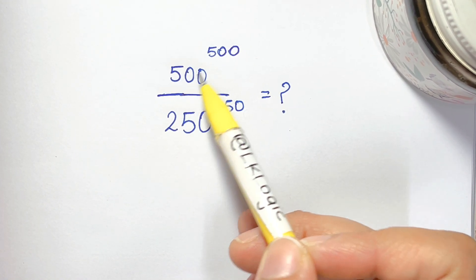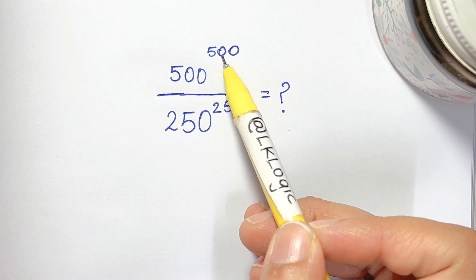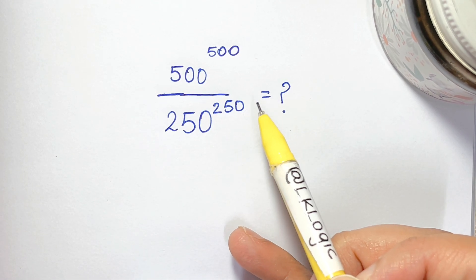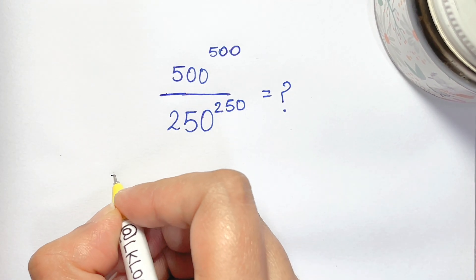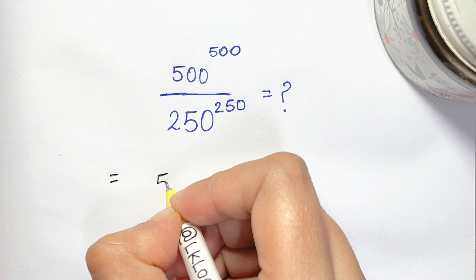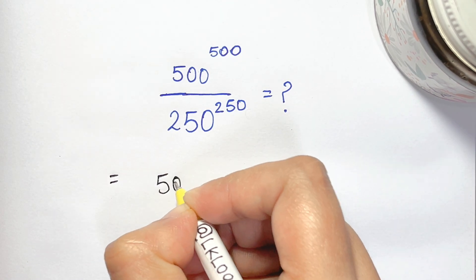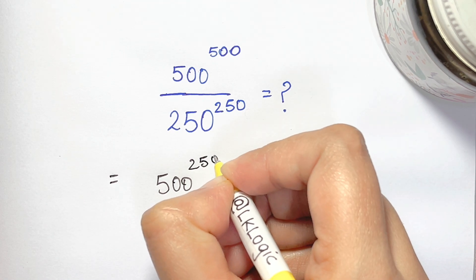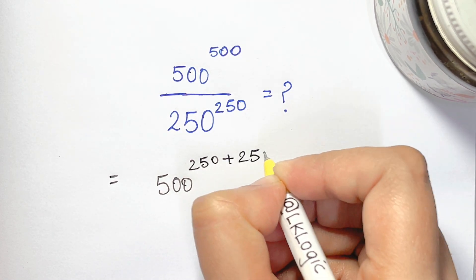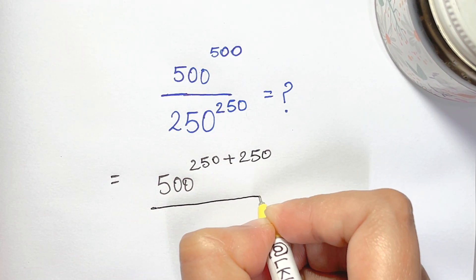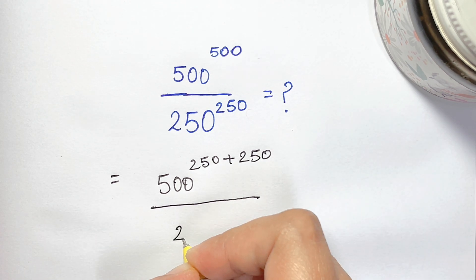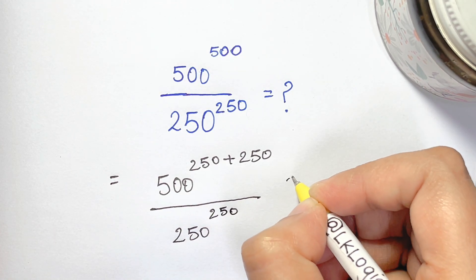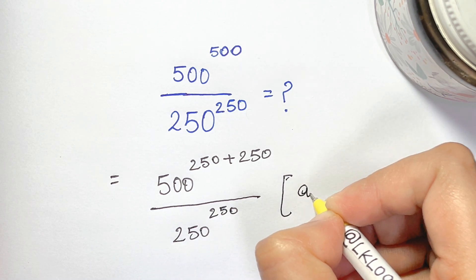How to solve 500 to the power of 500 over 250 to the power of 250? First, we're going to split this: 500 can be written as 250 plus 250, over 250 to the power of 250. Now we are going to use the exponent law.